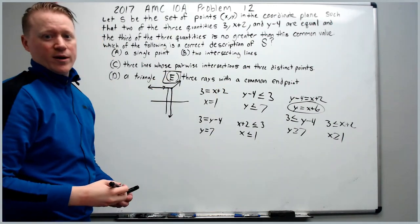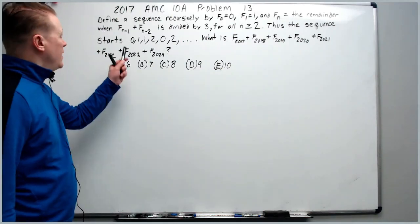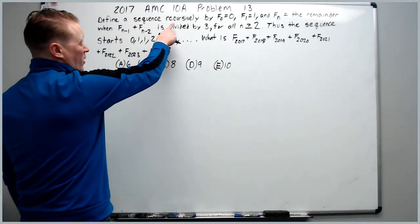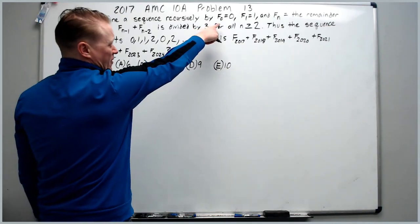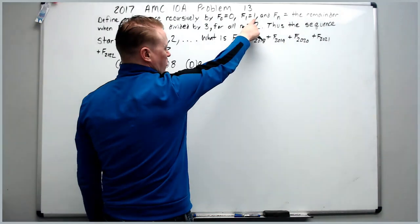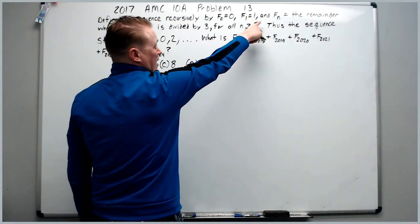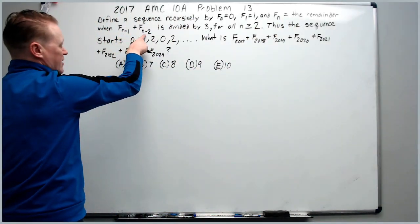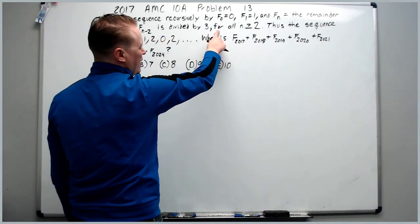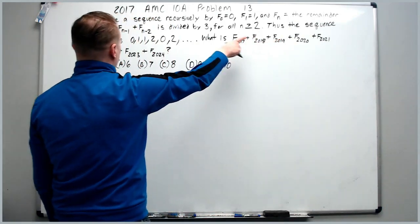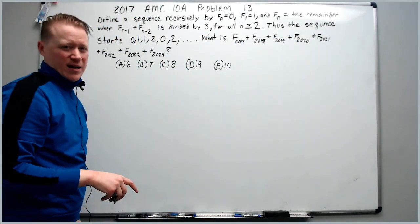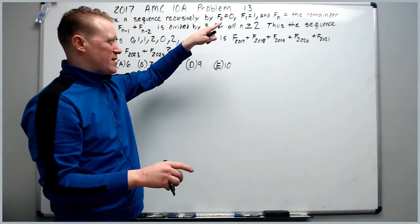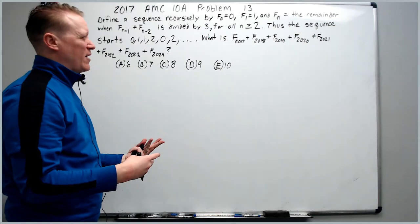Now we will do the 2017 AMC 10A problem 13. Define a sequence recursively by f₀ = 0, f₁ = 1, and fₙ is equal to the remainder when fₙ₋₁ + fₙ₋₂ is divided by 3 for all n ≥ 2. Ignore what they tell us about how it starts. Try to make sense of what they've said. Many people panic when they see subscripts and sequences and recursively.